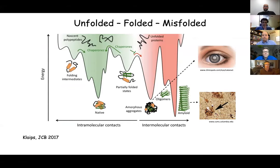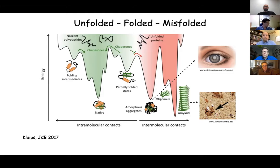If proteins behave nicely, they fold and give rise to specific three-dimensional structures that are able to perform specific functions. But if things go wrong, they might instead start to interact with each other, forming intermolecular contacts and ending up in different types of clumps. These clumps can either be amorphous — lacking structure, associated with cataracts — or form highly regular structures in the form of amyloid. Amyloid is not amorphous; it's highly structured, but has a completely different 3D structure that is non-functional and gives rise to toxic effects on surrounding cells and eventually disease.